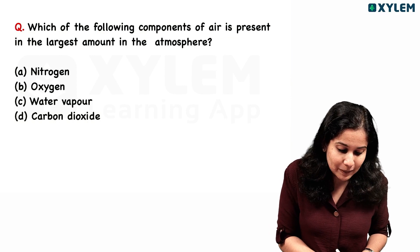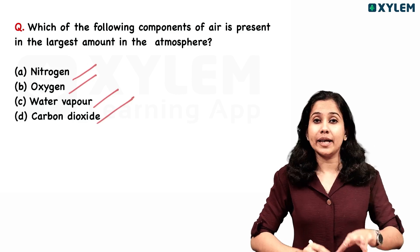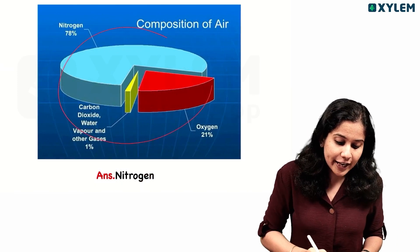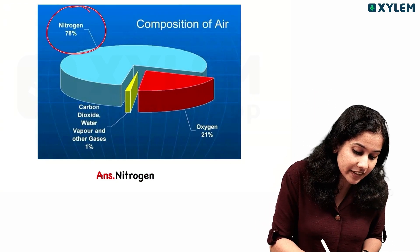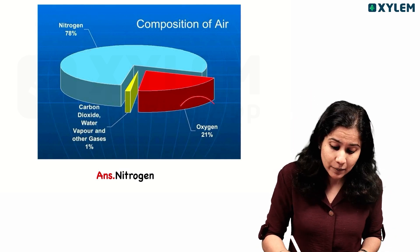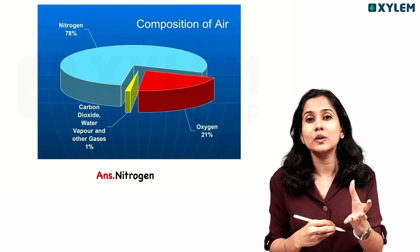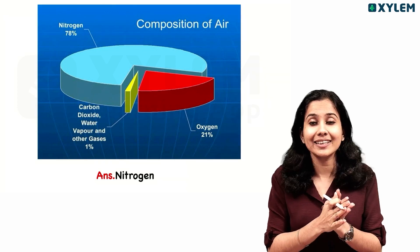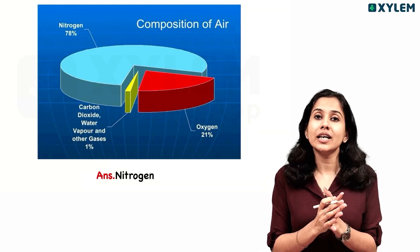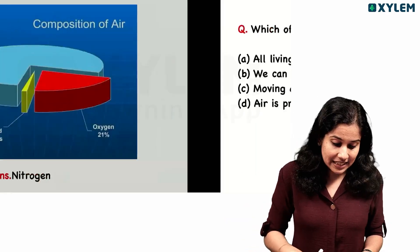Which of the following components of air is present in the largest amount in the atmosphere? Nitrogen, Oxygen, Water Vapor, Carbon Dioxide. If you look at a diagram, nitrogen gas is 78%, oxygen is 21%, and the rest includes carbon dioxide, water vapor, and other gases. So the answer is nitrogen — 78%. Ready? Let's go to the next question.